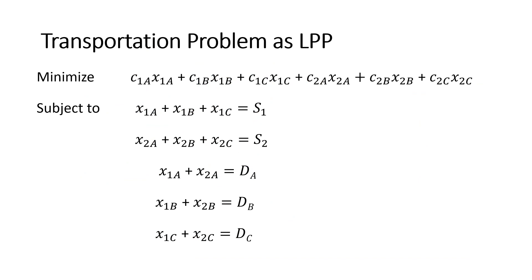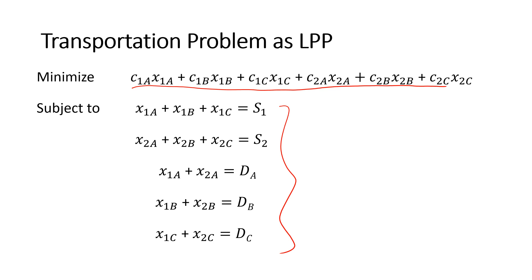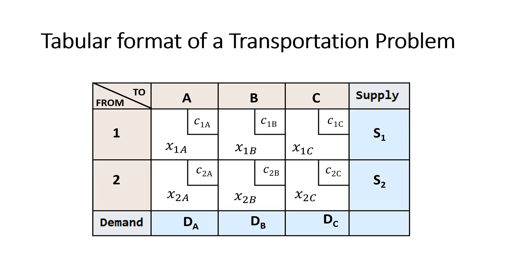When represented as a linear programming problem, the transportation problem takes this form: you minimize the objective function subject to the given set of constraints. In the unit on transportation problems, the main focus will be the discussion of algorithms that are used to solve this linear programming problem.